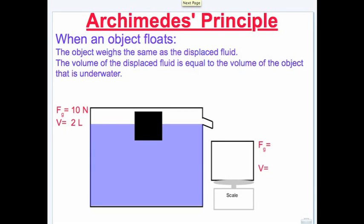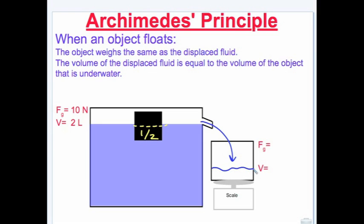When an object floats, the object weighs the same as the displaced fluid. The volume of the displaced fluid is equal to the volume of the object that is underwater. The object displaces water, which spills out into the container on the scale. Archimedes' Principle says that the weight of this fluid is equal to the weight of the object, which is 10 newtons. So a two-liter object halfway underwater will push out one liter of water, and that one liter of water will weigh 10 newtons.